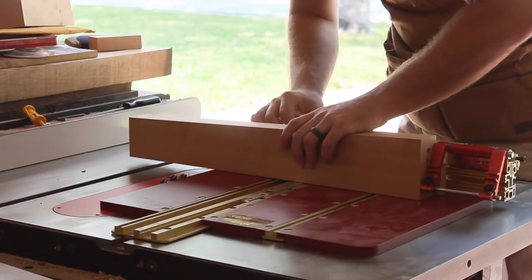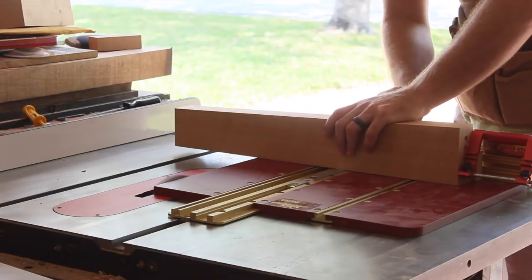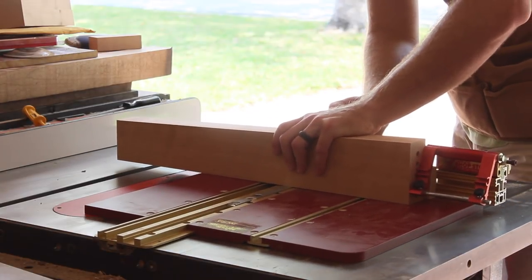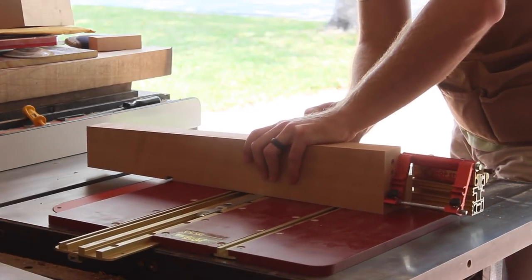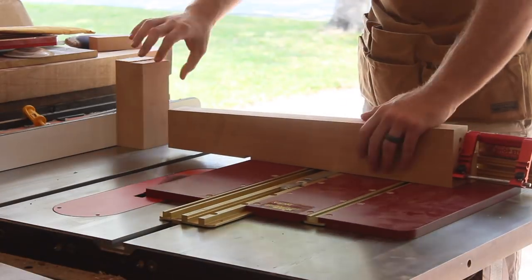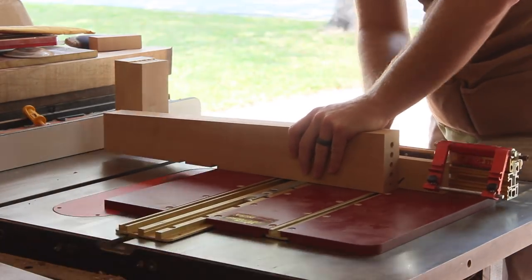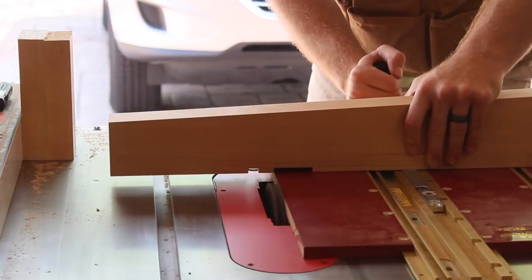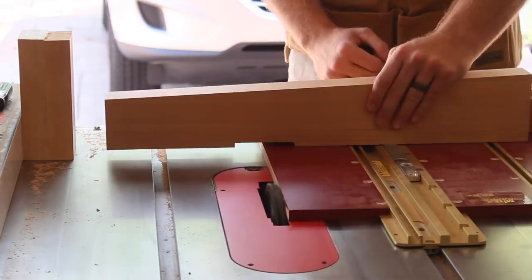Before gluing up the trestles, I had to take some time to cut the mortises in the vertical pieces. These will receive the stretcher that I'll make later on. I used a stop block on the miter gauge as well as a little block along my fence to create the 2 stops that would make the correct size mortise.